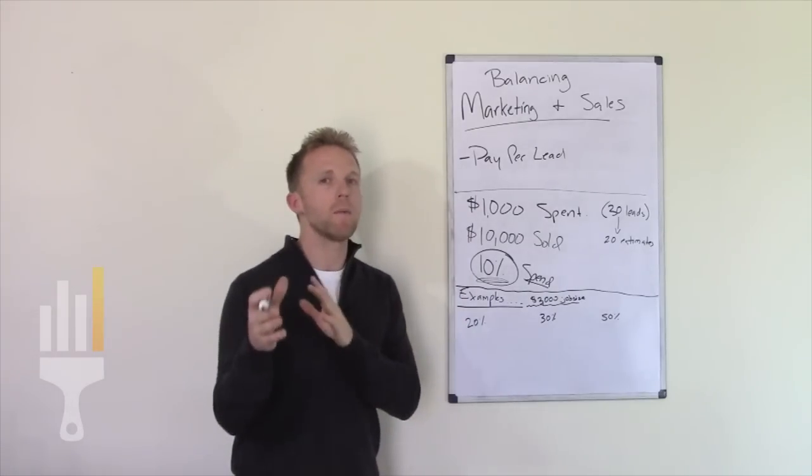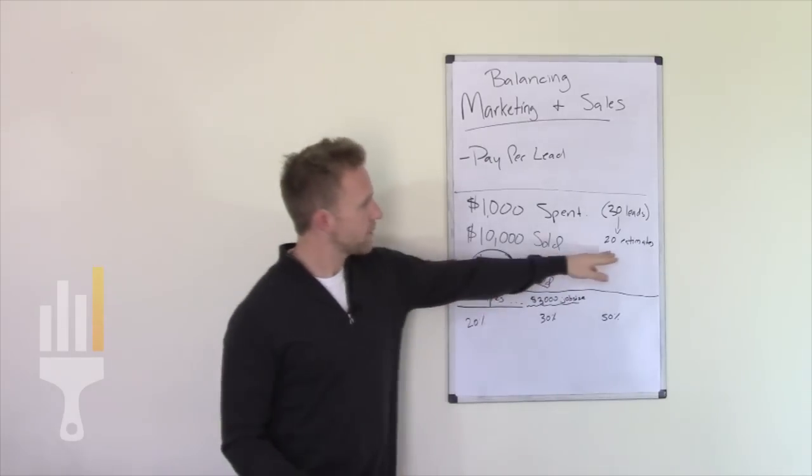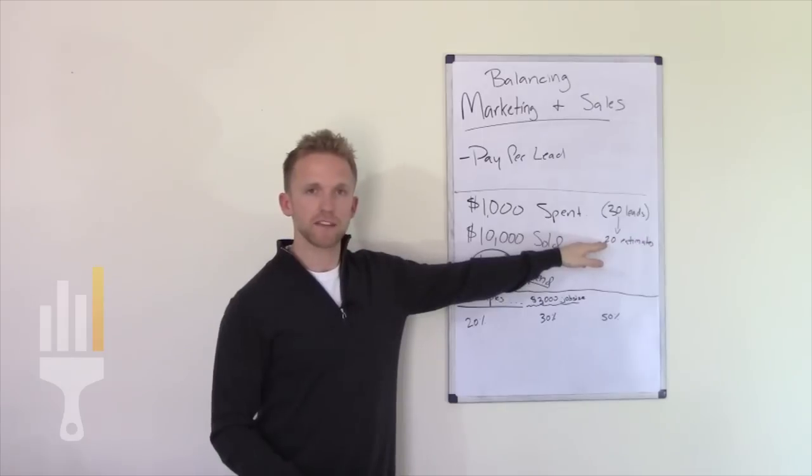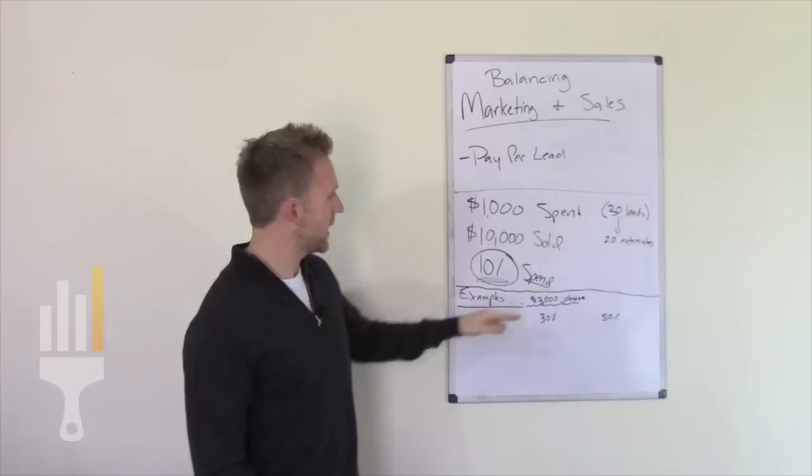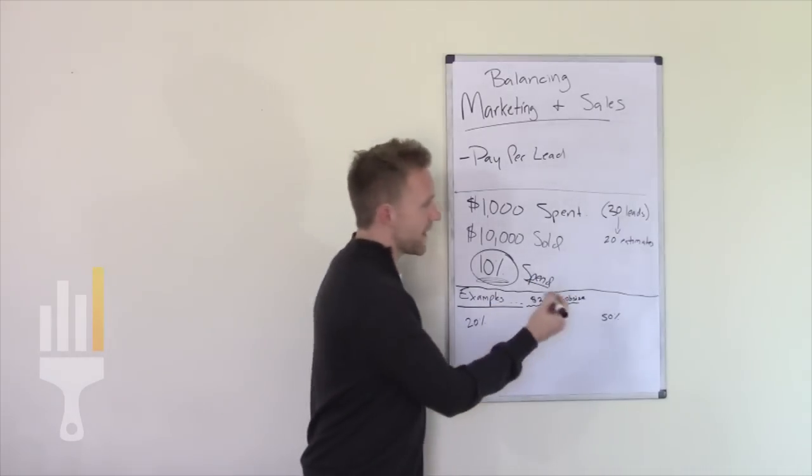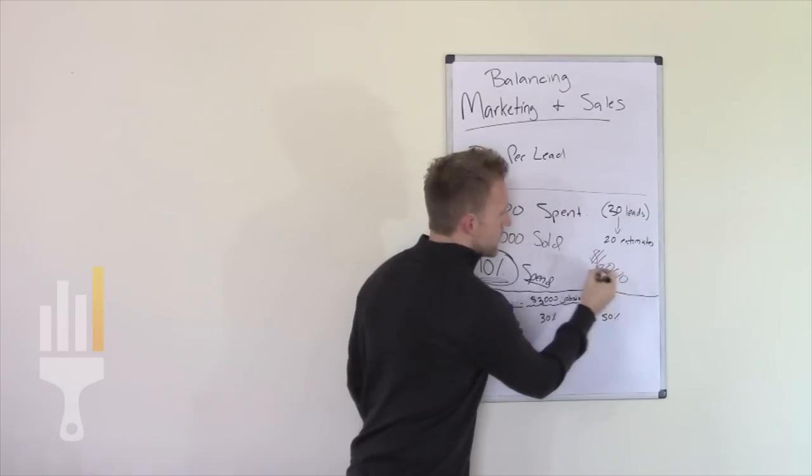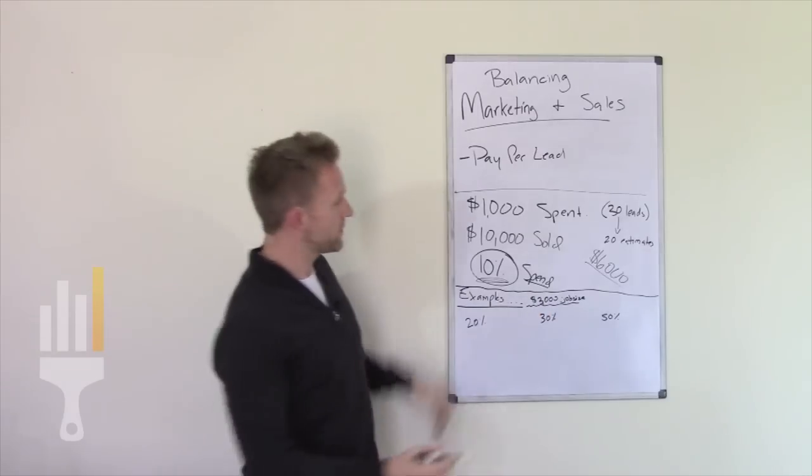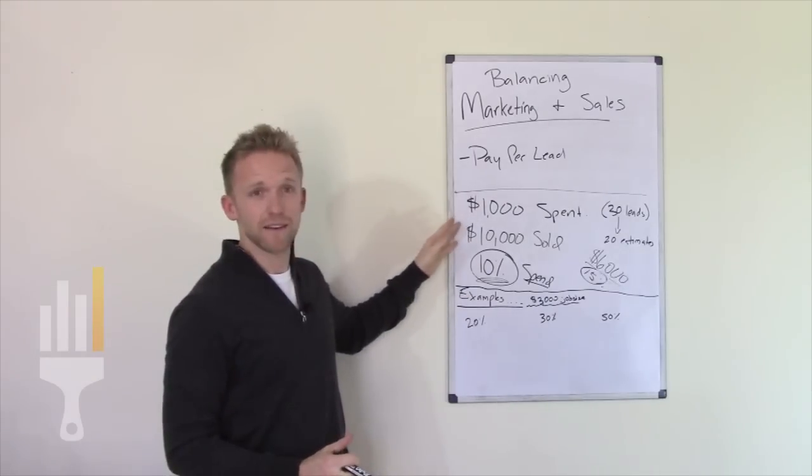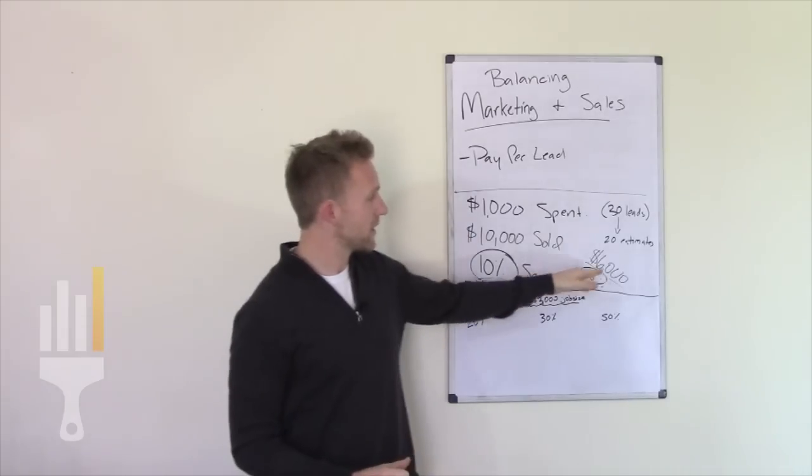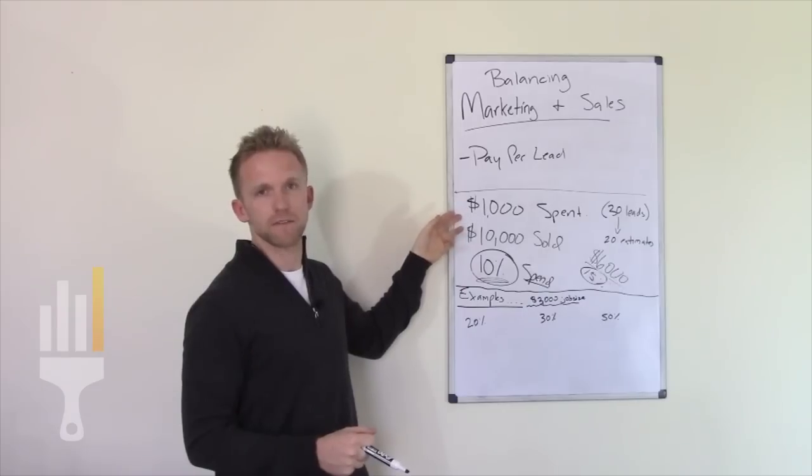Now we want to talk about how important and what a huge difference your sales ability is. So if we say we have 20 estimates, so we get 30 leads, we turn them into 20 estimates. Let's say we can only book 10% of our jobs, like we book one out of 10, and our average job is $3,000. So in that case, we would book two jobs for $3,000 each, so that would be $6,000. Now if we do $6,000 over $1,000, we're spending about 15% on marketing. So if we're spending 15% on marketing, this is not a very good marketing source for us. So if we can only close two out of 20 estimates for $6,000 total, we can't use Painter Choice. It's just not profitable for us.